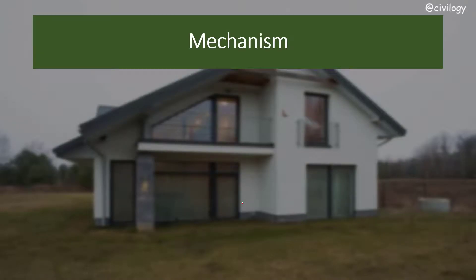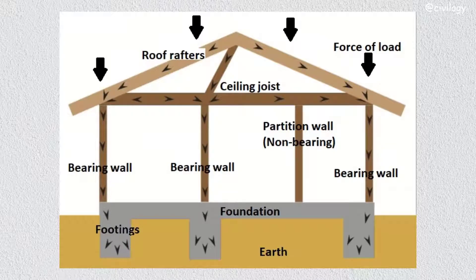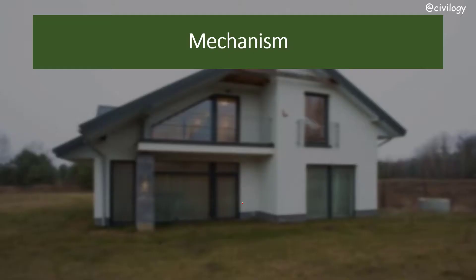Before we get into the mechanism of load bearing walls, what is a load bearing wall? A load bearing wall is a structure where the load is entirely transferred through the walls, through the foundation, and then to the ground. The basic difference from a framed structure is that in the framed one, the load is transferred through the beams, beam to column, and column to the foundation.